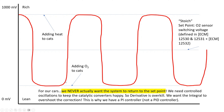We actually want the system to overshoot, and that's why we have a PI controller. In industry, PID controllers are common, PI controllers are common, and PD controllers are common. It all depends on the system in question and the different variables and factors involved.